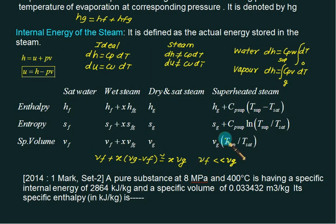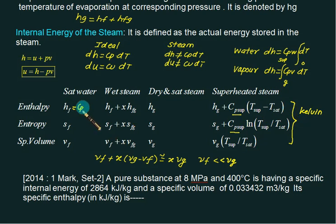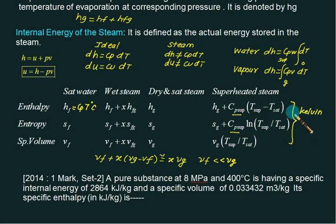The specific volume formula for superheated steam is vg × (T_sup / T_sat). In all these calculations, always prefer temperature in Kelvin, except for calculating hf where you use degree Celsius (or subtract 273 if using Kelvin). All other thermodynamic equations are based on absolute temperature, so use Kelvin for those.